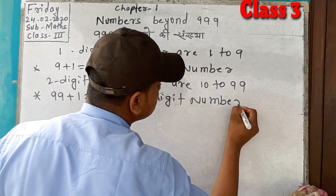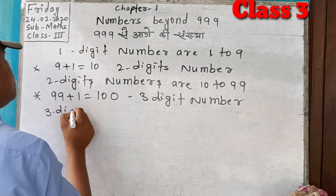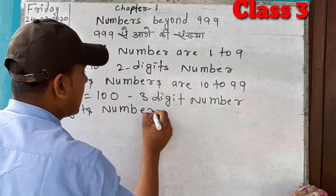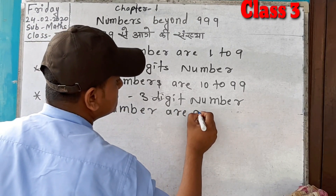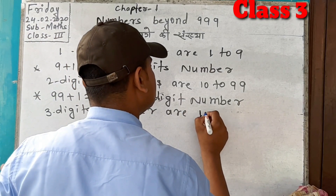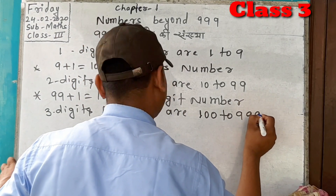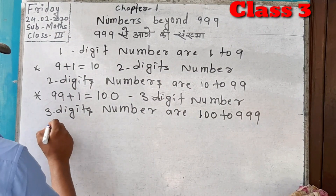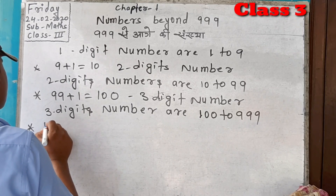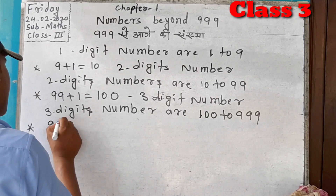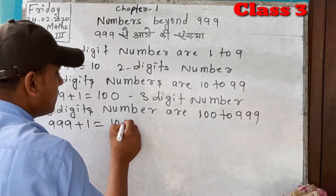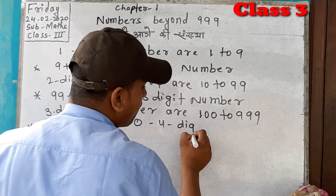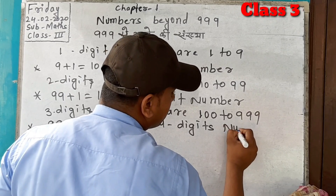Three-digit numbers are 100 to 999. If we add 999 plus 1, it is equal to 1000, which is a four-digit number.